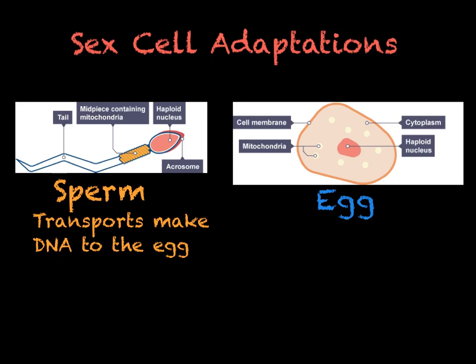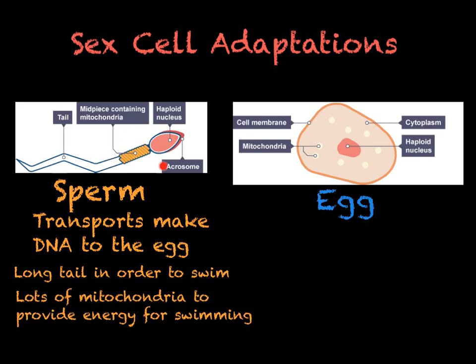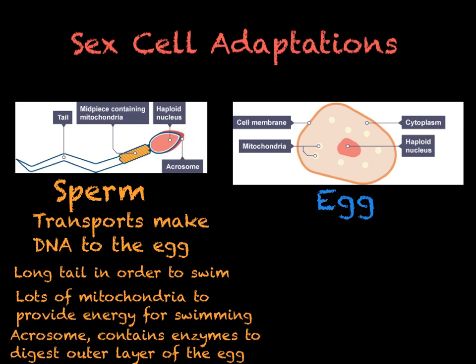Sperm are very small and have long tails which enable them to swim to the egg. They also have lots of mitochondria in the midpiece region, which provide the energy from respiration that enables the sperm to swim to the egg. Sperm also have an acrosome on the top of the head which contains enzymes that enable it to digest through the outer cell membrane surrounding the egg. Finally, sperm cells have a haploid nucleus, meaning they only have one copy of each chromosome.